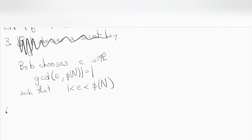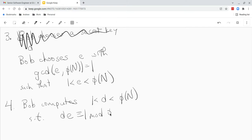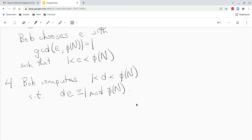Then Bob computes a number d between one and phi n such that d times e is congruent to one mod phi n. Now Bob has done all the computation he needs.